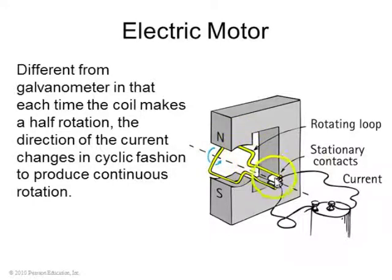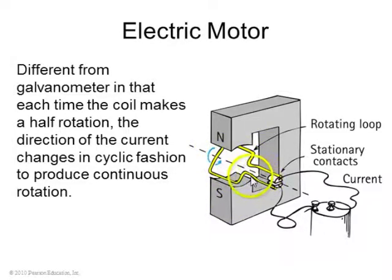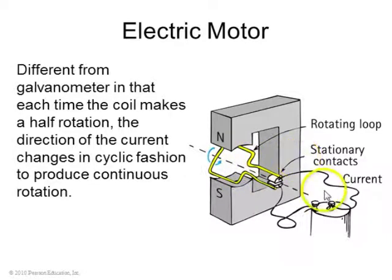If you take a galvanometer and cleverly switch the current direction every time it makes half a rotation, instead of just turning a dial you can make the dial go round and round continuously — and this is what's actually called an electric motor. That's how the electric motor works: you get continuous rotation.